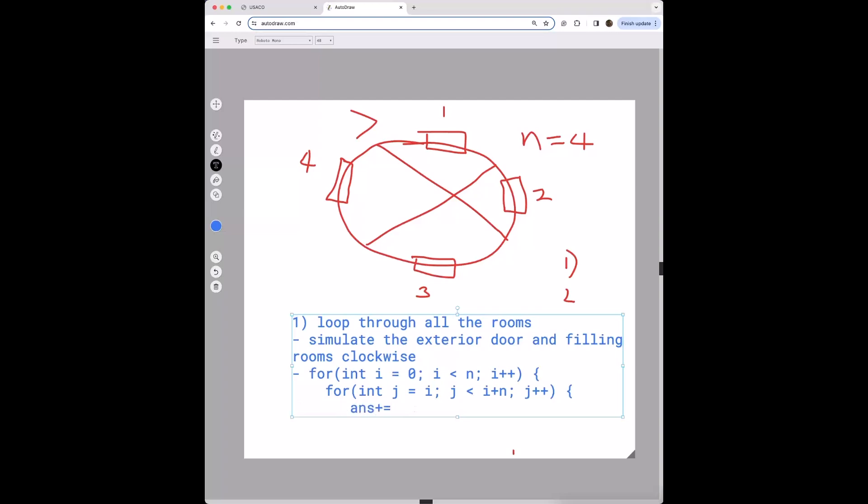What we can do is ans plus equals, let's say we have an array with the number of cows, so array of j mod n times j minus i.